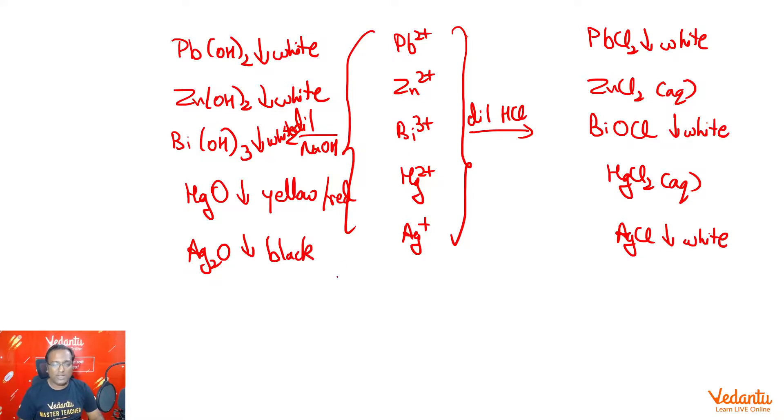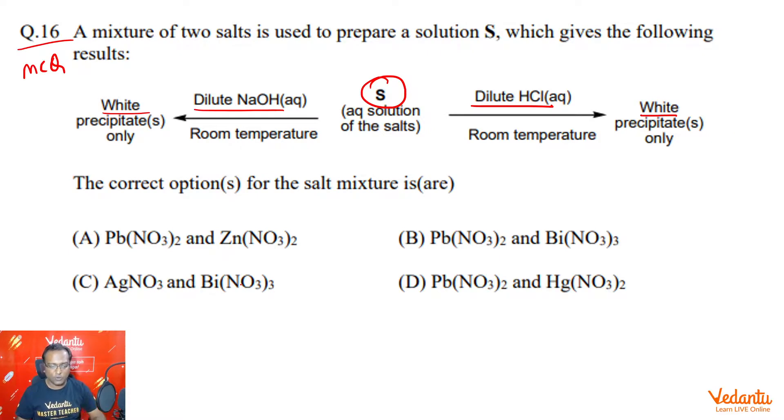So definitely, because in the question it says only white PPT is needed. Let's go back to our options. Silver option cancelled because Ag2O was black. Hg option cancelled because HgO was either yellow or red, depending on the temperature.